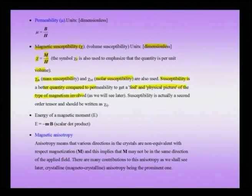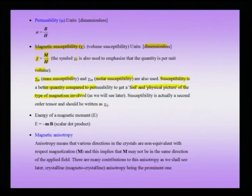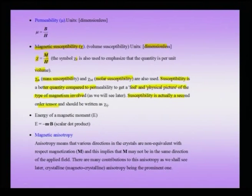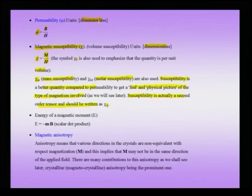The magnitude and sign of susceptibility will indicate whether a material is paramagnetic or diamagnetic. Technically, susceptibility is a second-order tensor with subscripts i, j. The equivalent quantity B/H is called the permeability, also dimensionless. In these lectures, we will focus on M, H, and chi, and give lesser importance to mu and B.